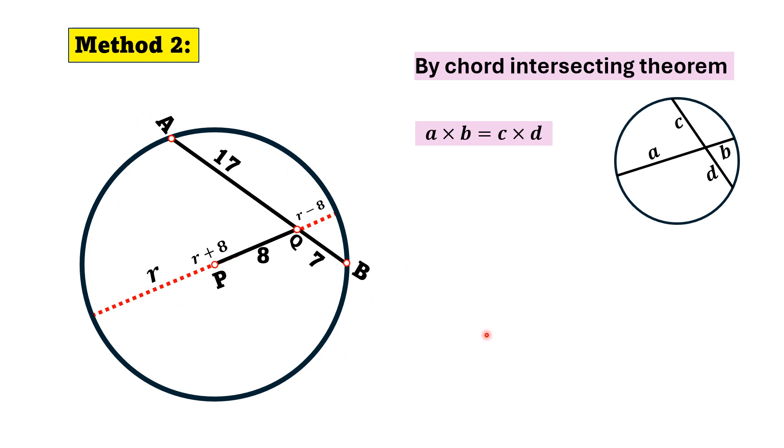So using this theorem in our problem, we will get R plus 8 times R minus 8 is equal to 17 multiplied by 7.